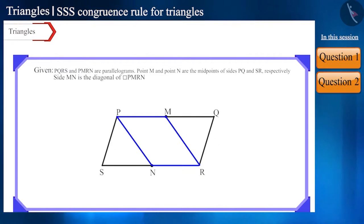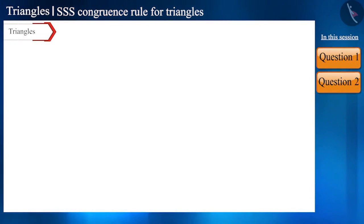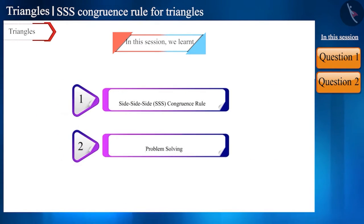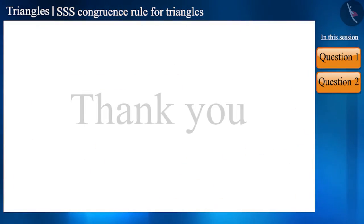Friends, if we draw diagonal MN in PMRN by joining point M and point N, then will the triangles PMN and NRM be congruent? Pause the video and check your answer and try to reach the conclusion on your own. That's it for today's session. Today we solved some questions based on the side-side-side criterion or the SSS congruence rule. See you in the next video. Thank you.